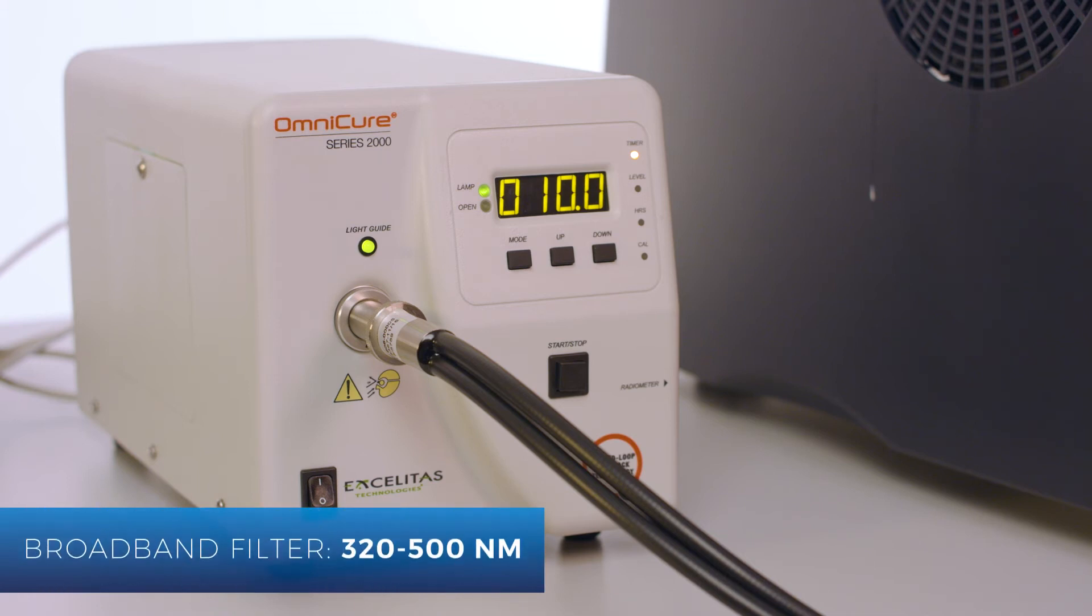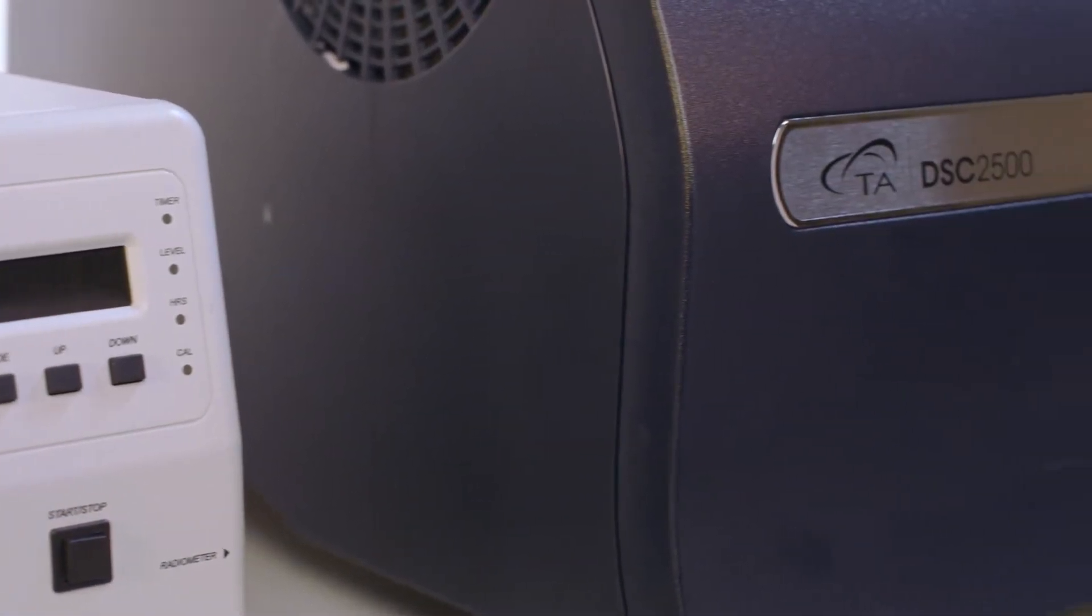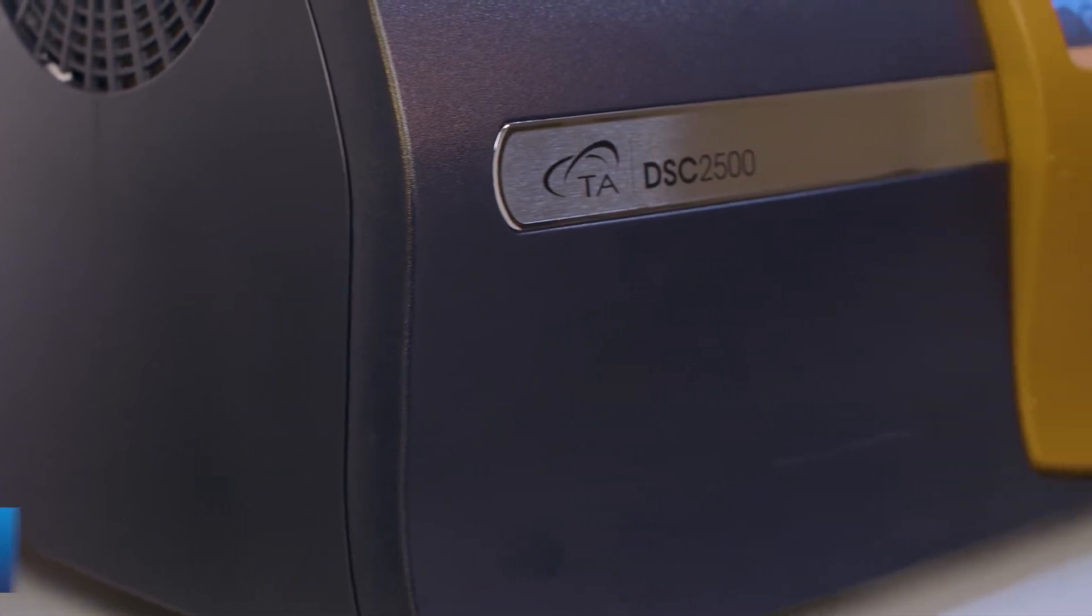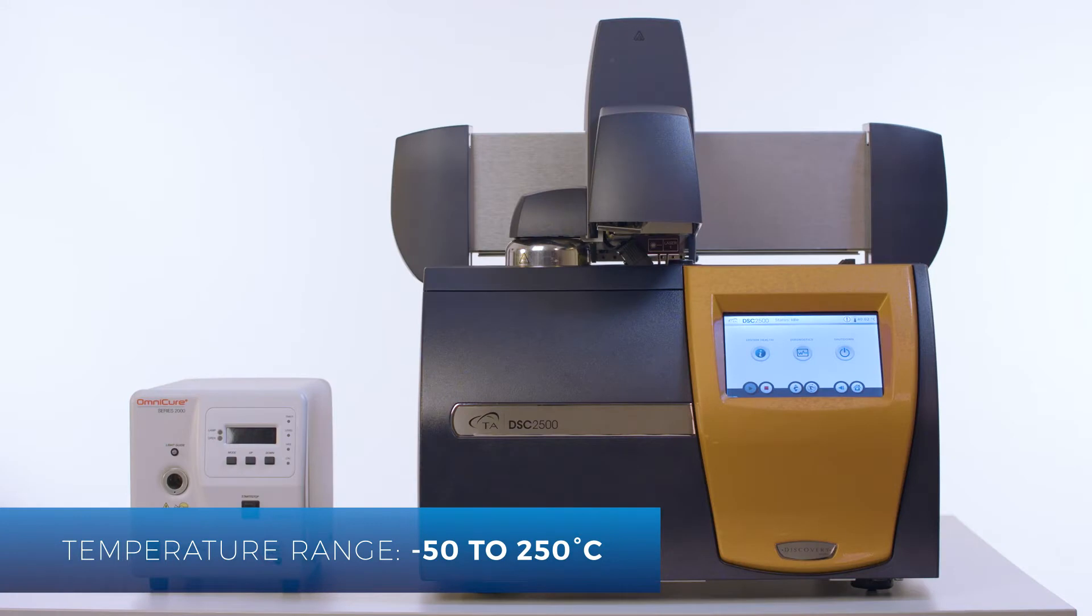A broadband filter 320 to 500 nanometers is provided with the Omnicure. The PCA can be used over the temperature range from negative 50 to 250 degrees Celsius and is compatible with the Discovery DSC using FACS and RCS cooling accessories.